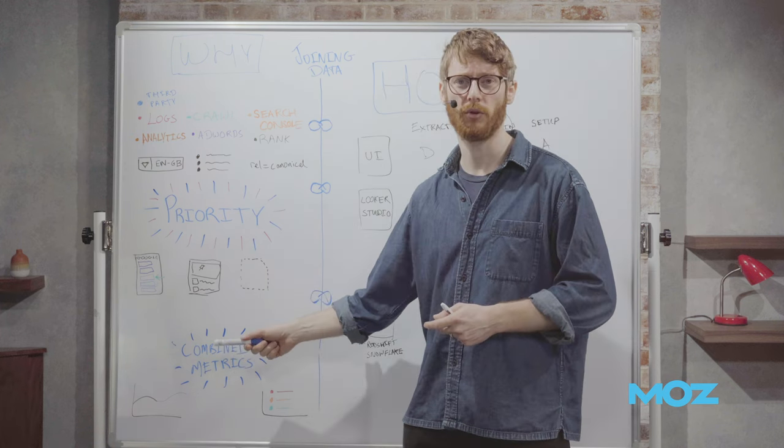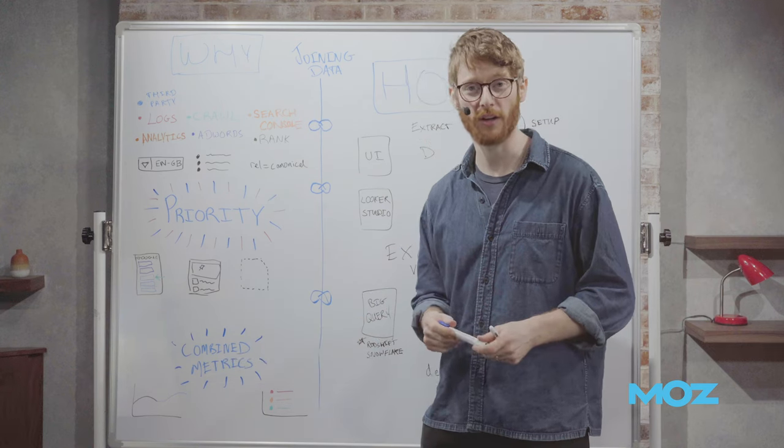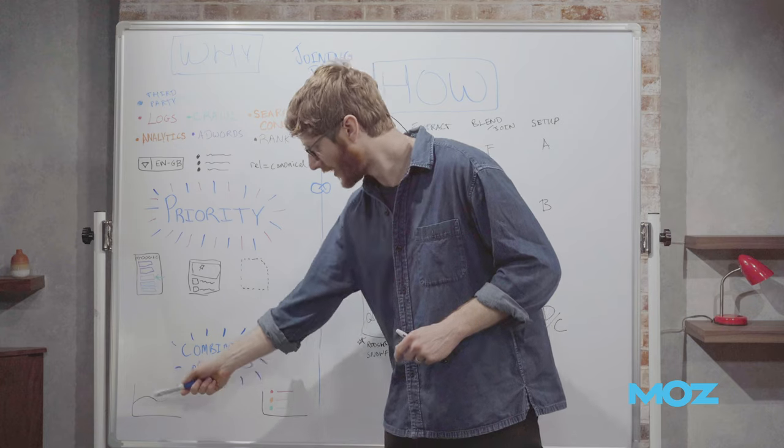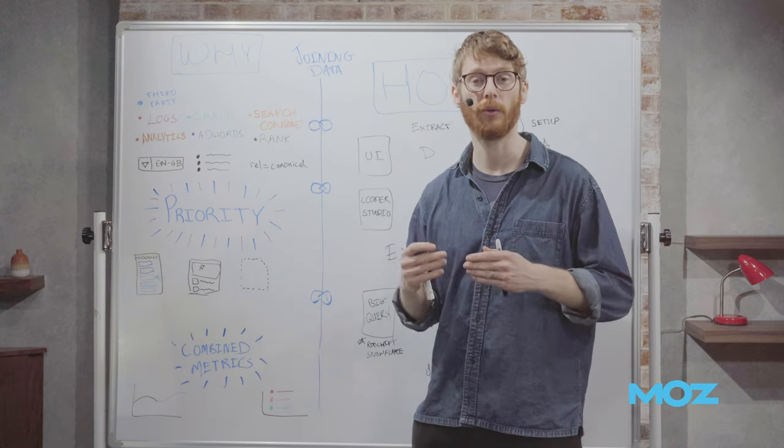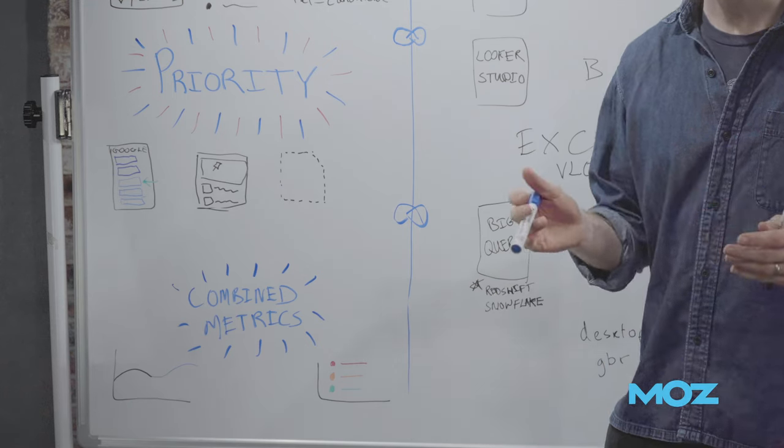you basically have to join the two of them together unless you were really, really on top of it and set up GA4 early. But if I experienced that has not been the case, that's a case where you cannot get that number unless you don't go and join those two together. Another example of here is indexation.